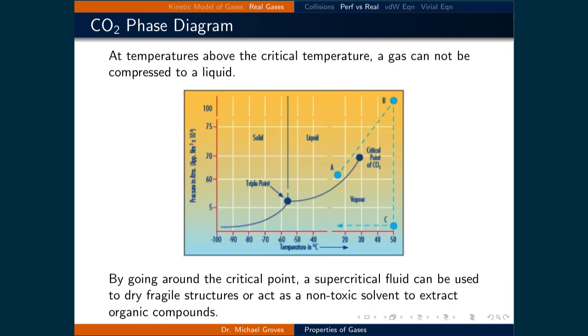One interesting property of the liquid gas phase transition is that if one follows a specific temperature pressure program, the substance does not need to go directly through a phase boundary. As shown in this phase diagram for carbon dioxide, plotted for the pressure of CO2 as a function of temperature, the parabolic shaped line that denotes the boundary between the liquid and the vapor phase ends at something called the critical point.